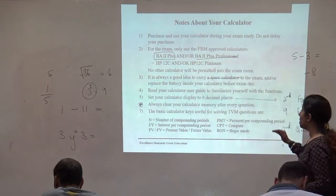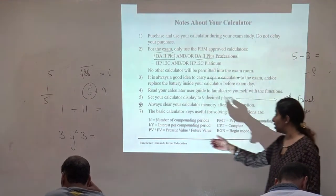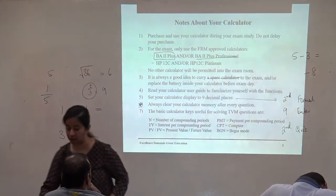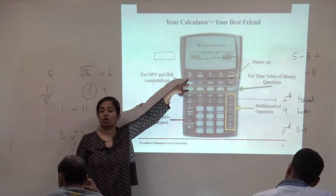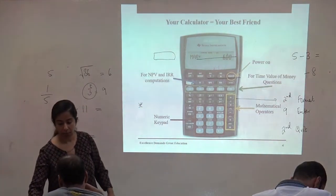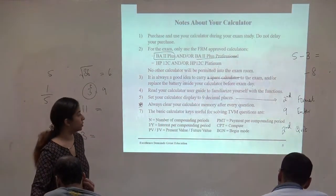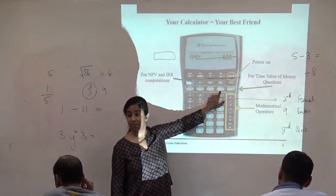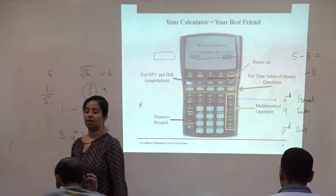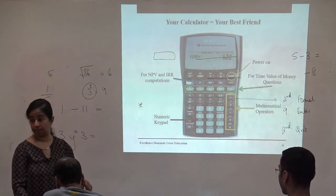Always clear your calculator memory after every question. This is of the utmost importance. And I will explain how to clear the calculator's memory when we're doing the math. The basic calculator keys that we will be using today for your time value of money questions are, N, the number of periods you are earning interest, the number of compounding periods. IYY, the interest that you're earning per period. PV means present value. FV means future value. PMT is a regular stream of payments you make each period.